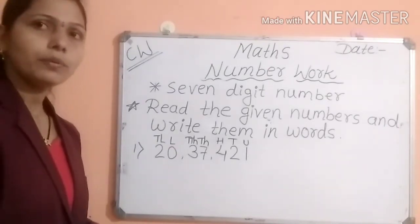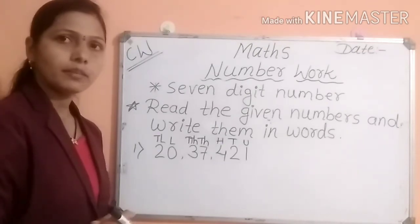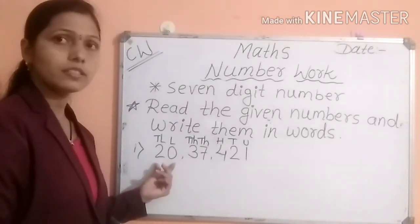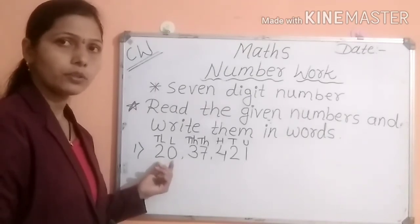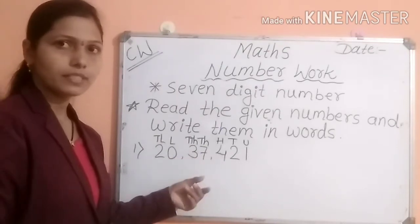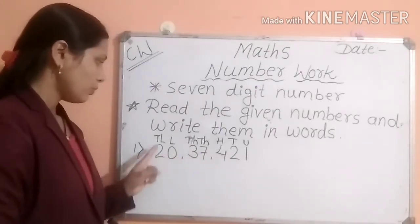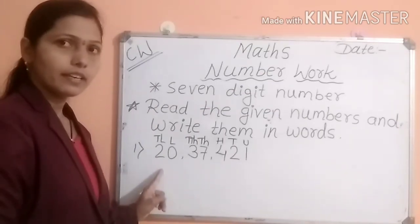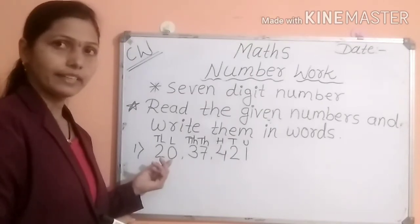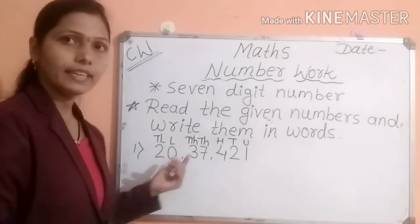Now read the number. Both digits at lakh and ten-lakh place you have to read together. Here, two is at ten-lakh place and zero is at lakh place. So which number is this? Twenty. And which family? Lakh family. So twenty lakh.